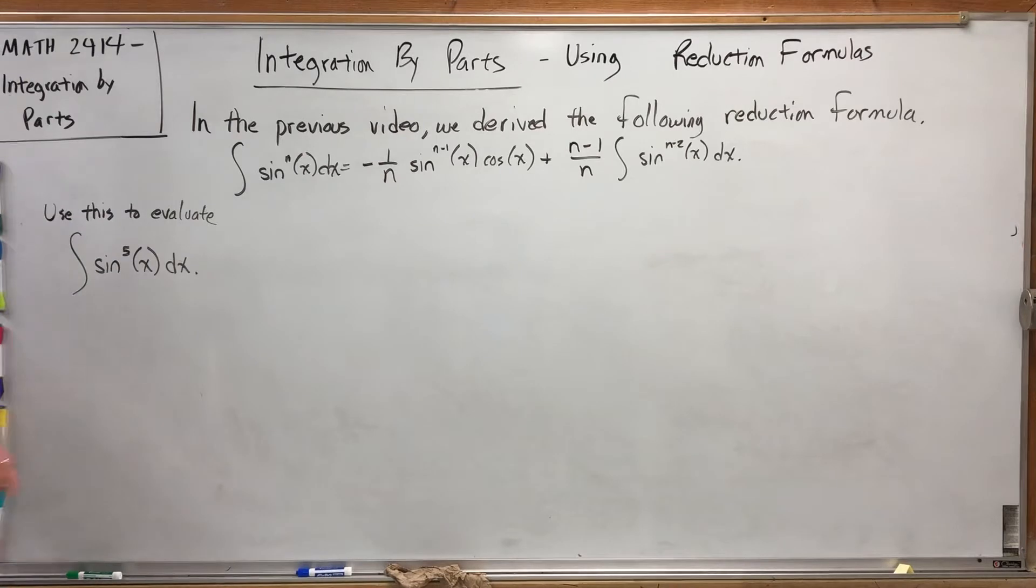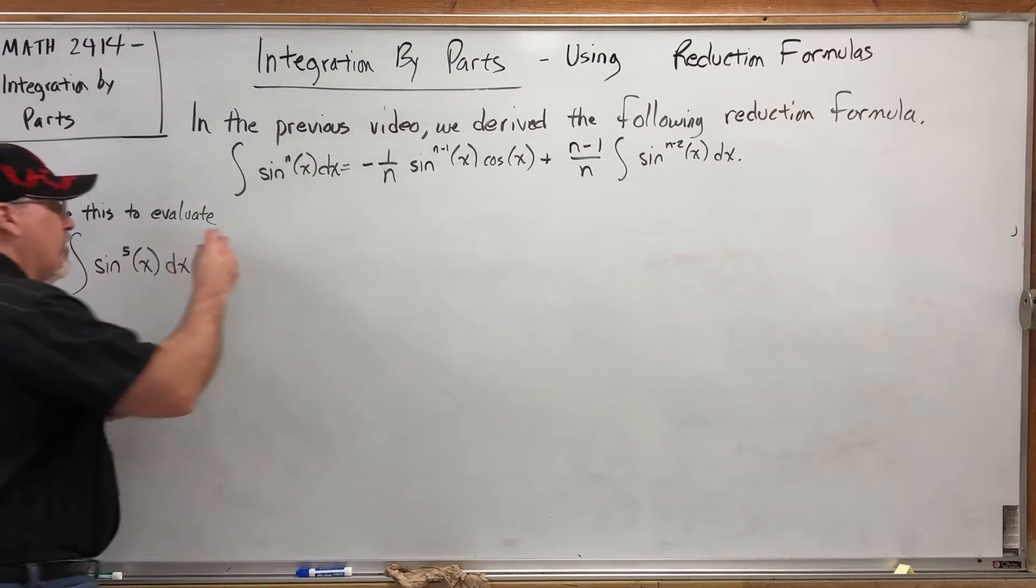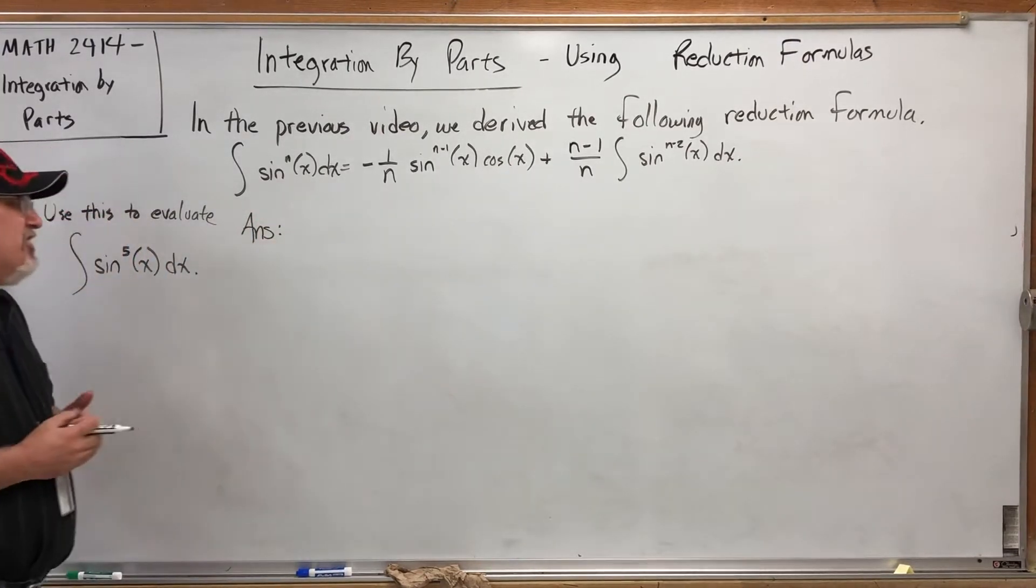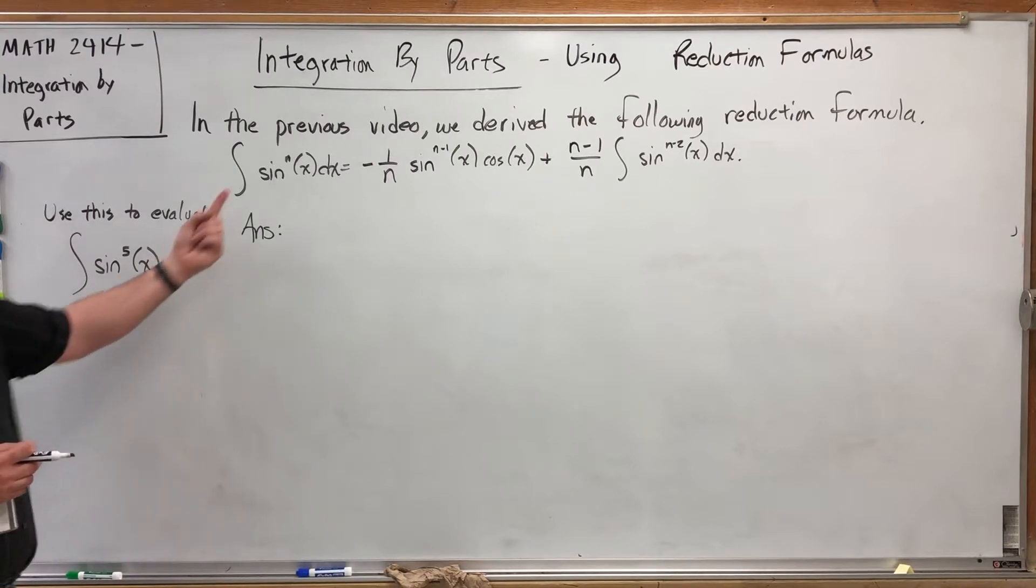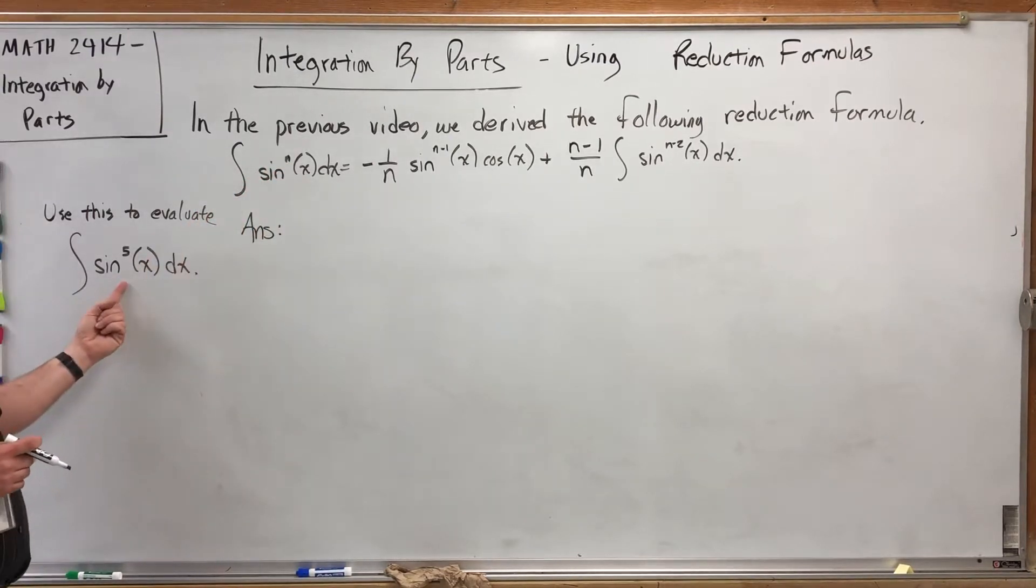Now we're going to use this to evaluate the integral of sine to the fifth. It's actually pretty easy. All you have to do is figure out what n equals and stick it in everywhere. Since we're evaluating sine to the fifth power of x and n is the power of sine, we have n equals 5.